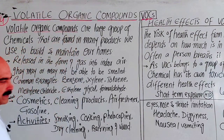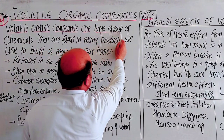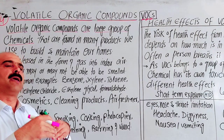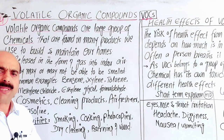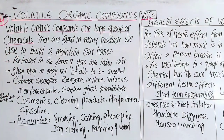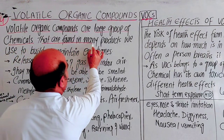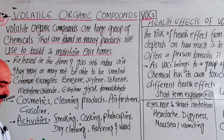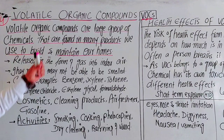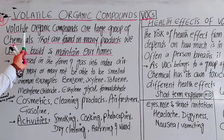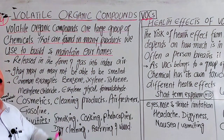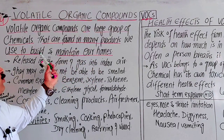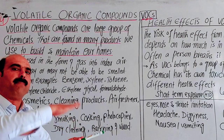Volatile organic compounds — VOCs — are a large group of chemicals. They are not just one compound but an entire group of chemicals. They are found in many products we use to build and maintain our homes. This important point is to be noted: VOCs are a large group of chemicals that are used to maintain and build things around us.